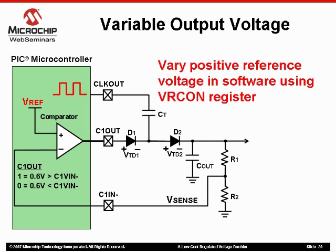Some of the microcontrollers available here at Microchip come with a variable voltage reference control register called VRCON. Here we can configure the software or firmware to change this reference voltage based on external conditions. The possibilities are limited only by the programmer's imagination. By varying the reference voltage, you are effectively changing when the comparator will output either a high or a logic low. So this makes for a very robust design.